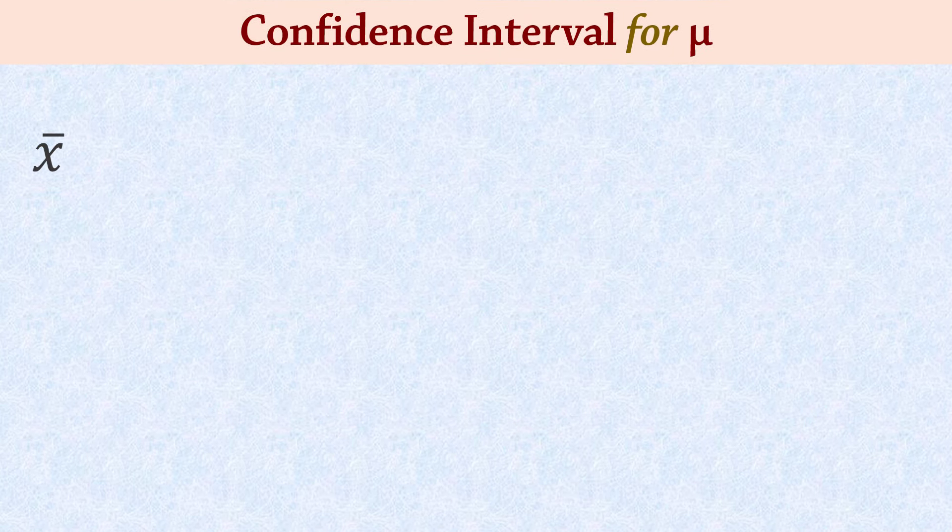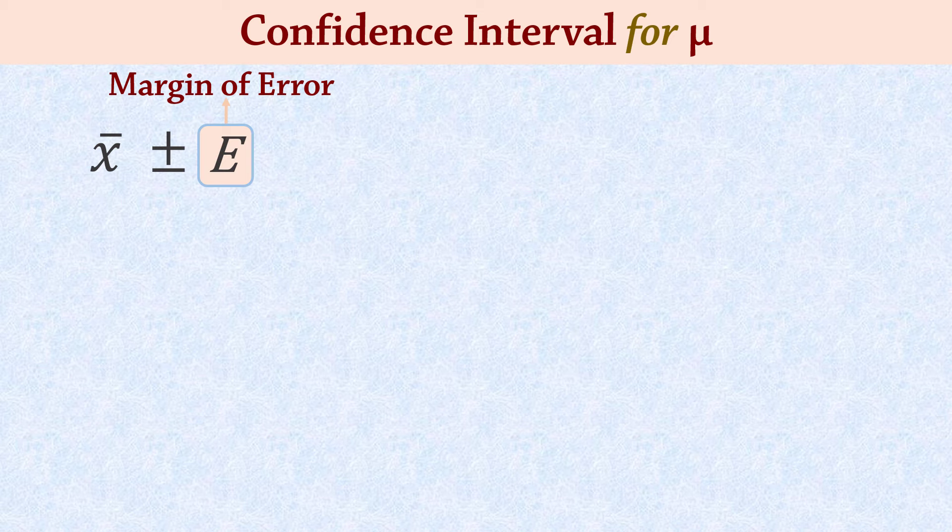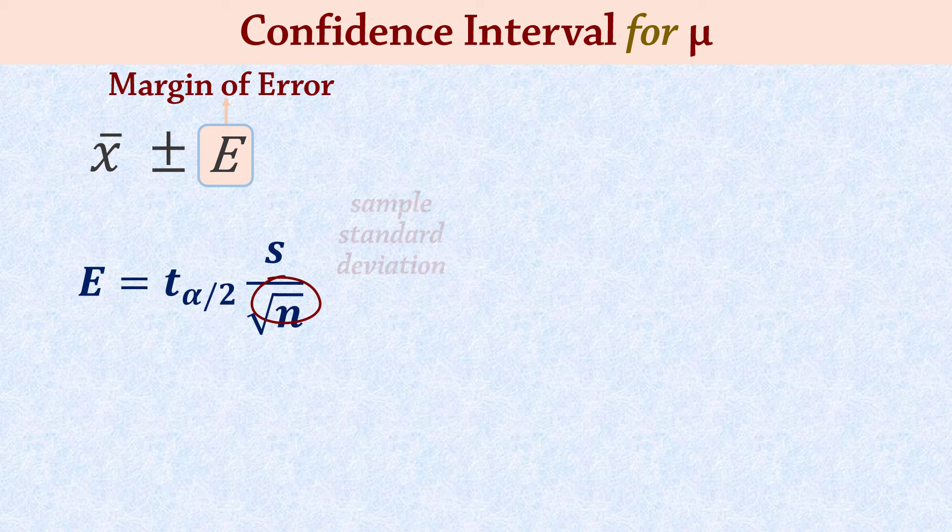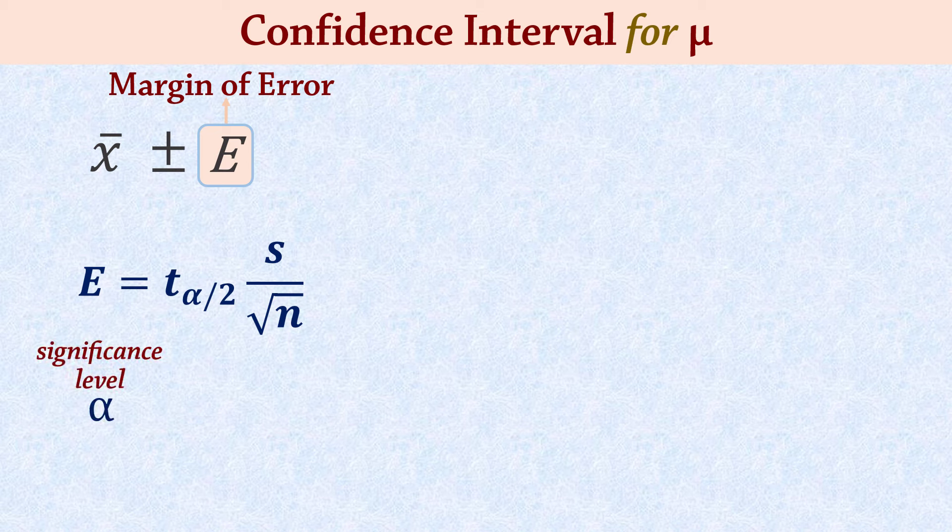In constructing the confidence interval for a population mean, given the sample standard deviation, the margin of error is given by this formula, where T alpha over 2 is the critical value. That is the value we look up in the table or obtain using software with degrees of freedom N-1. S is the sample standard deviation and N is the sample size. Alpha is the significance level, which is 1 minus the confidence level.